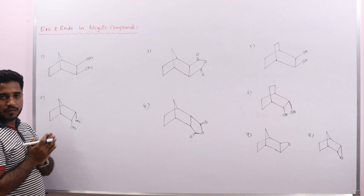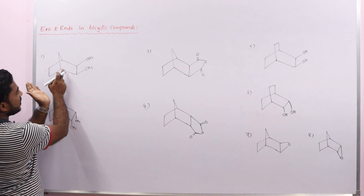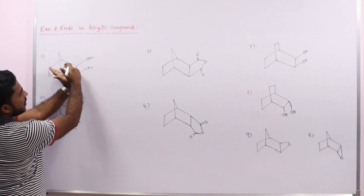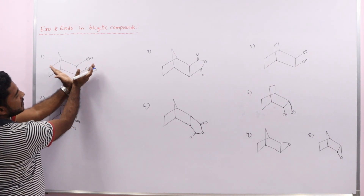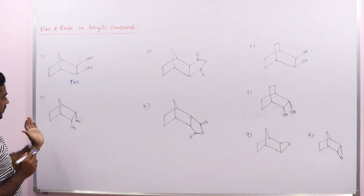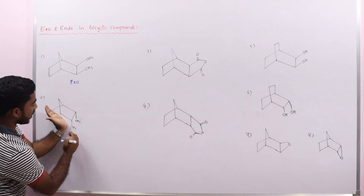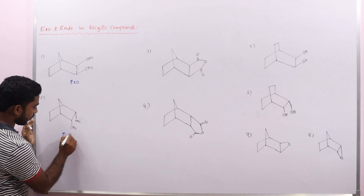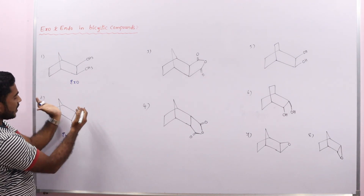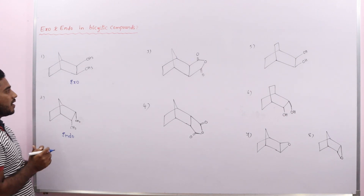When ring and groups are on the same side, we call it exo. Here you can see this bicyclic ring — the ring and groups are on the same side, so we call it exo. When ring and groups are on opposite sides, we call it endo.